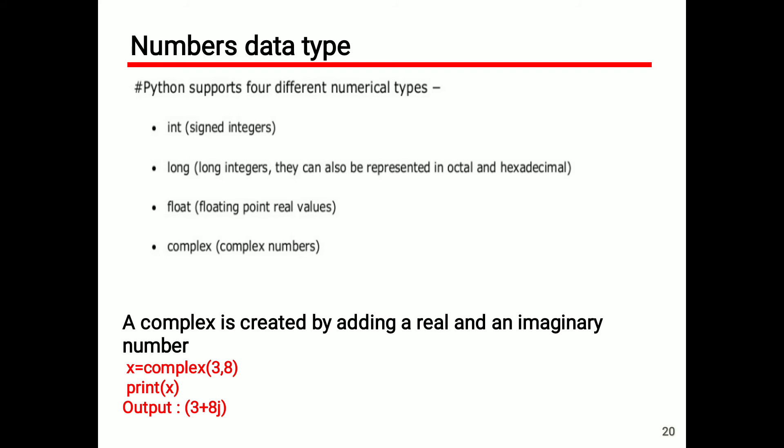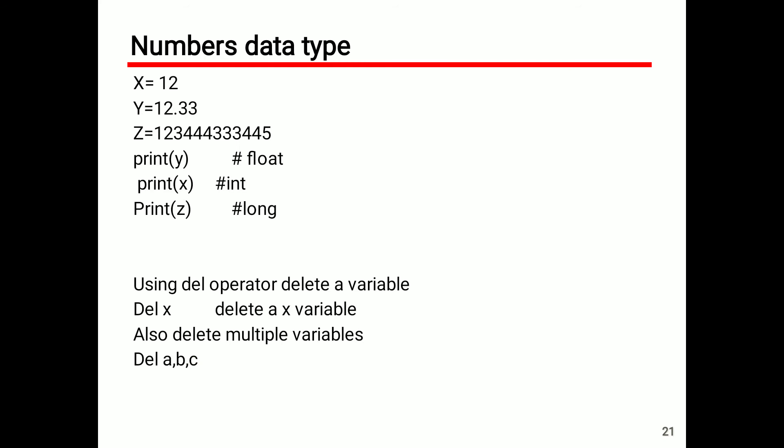Number data type example: x = 12 (int), y = 12.33 (float), z = 34433345 (long). Print y gives the float value, print x gives the int value, print z gives the long value. Using the del operator we can delete a variable — del x. We can also delete multiple variables at once: del a, b, c.